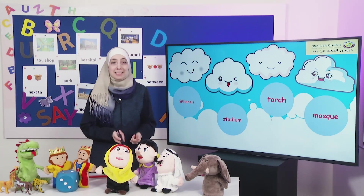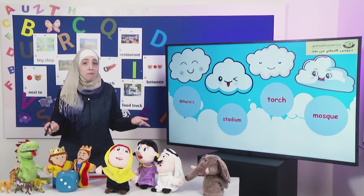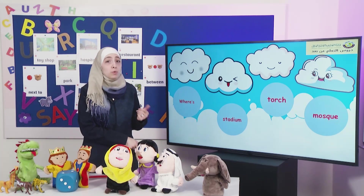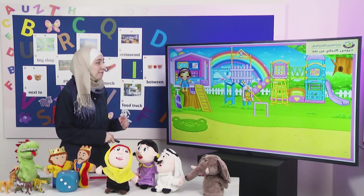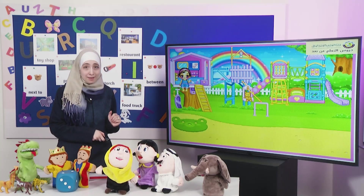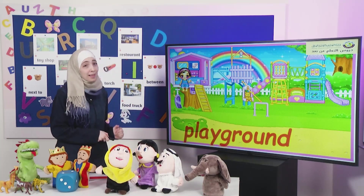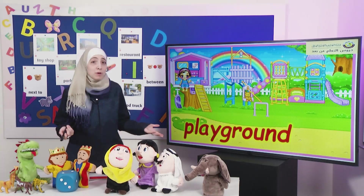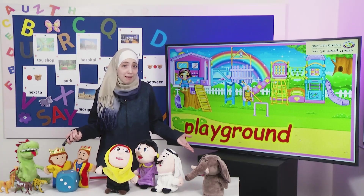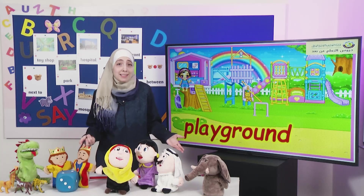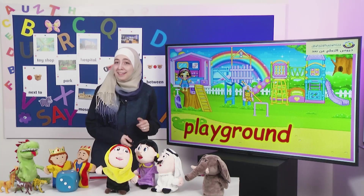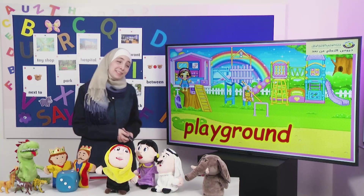Very nice. Now let's have a look at our new words for today. First one, what can you see here? Yes, it's a playground. Have you ever visited a playground? I used to visit the playground when I was a little girl. That's great, dear students.